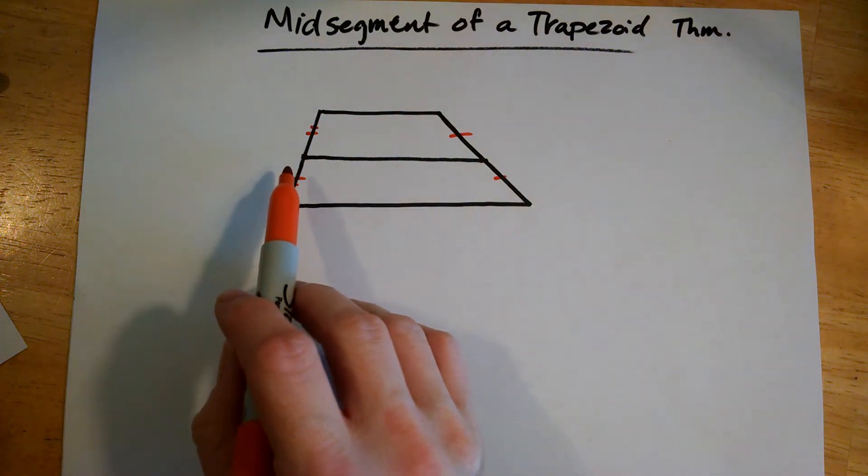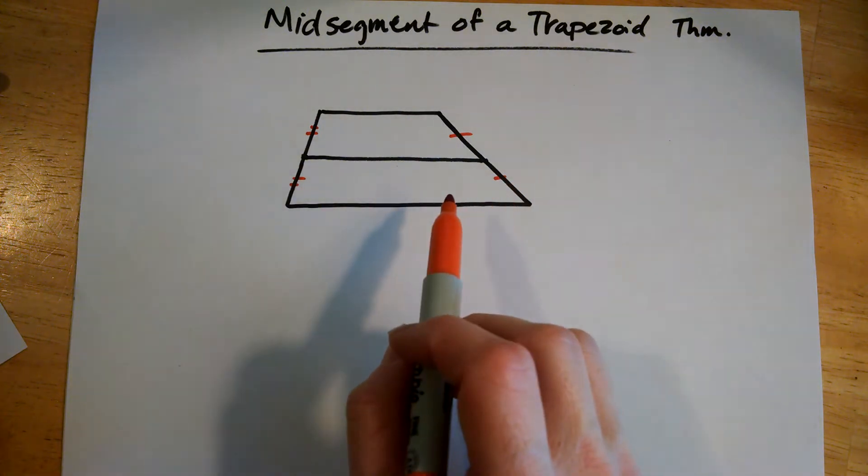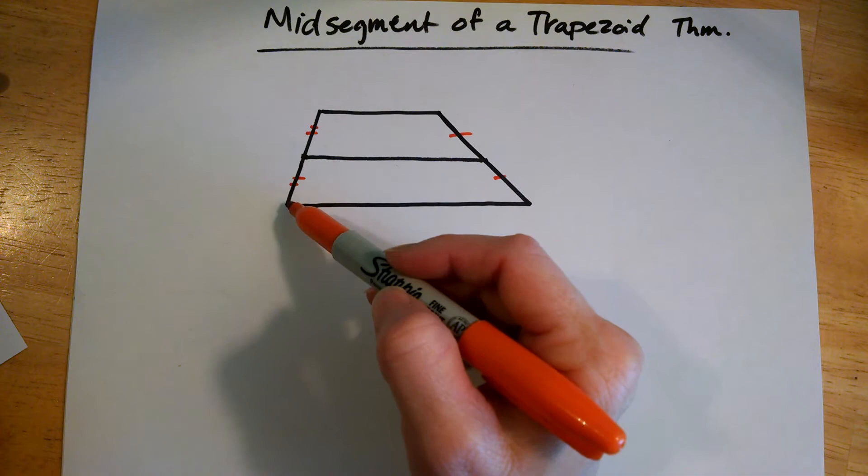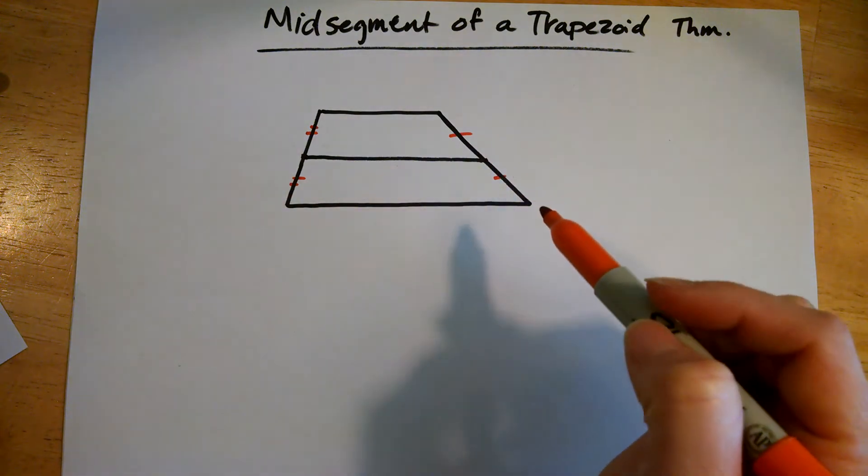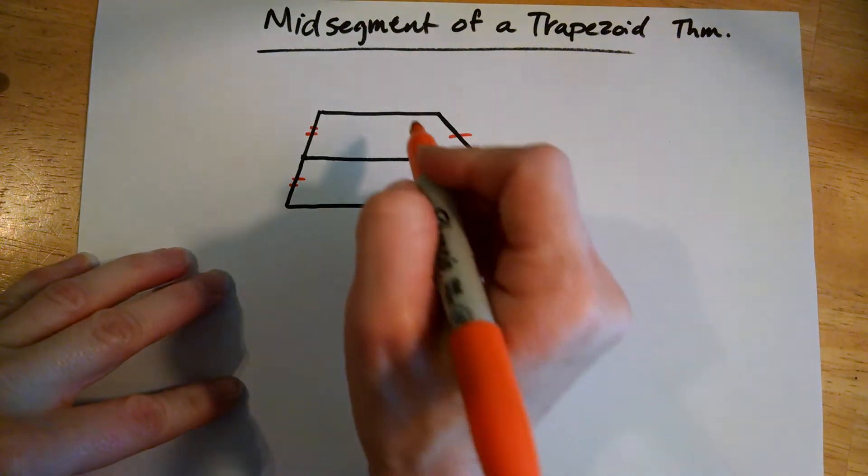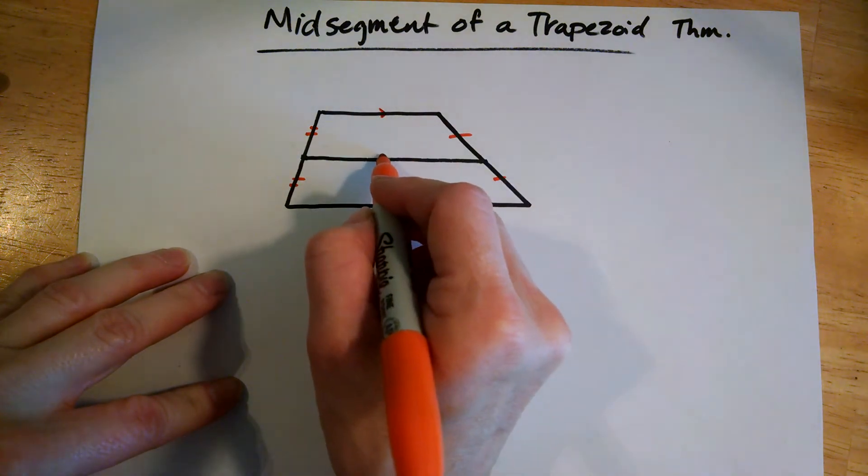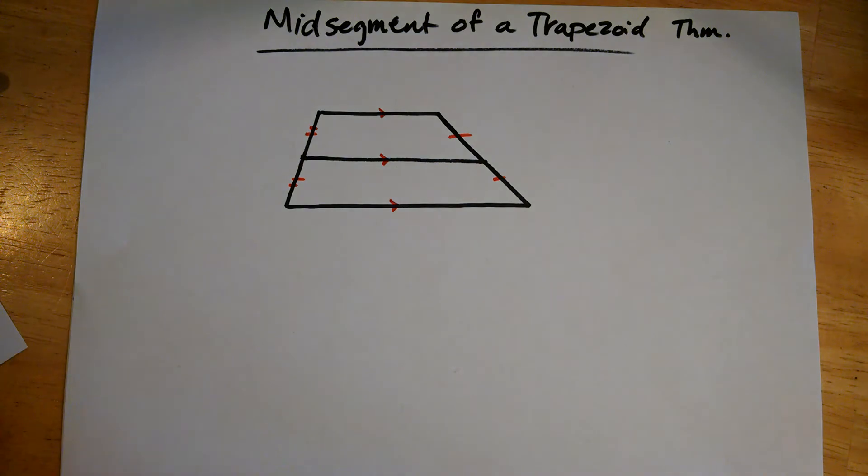Now the mid-segment is a segment in a trapezoid that is from the midpoint of one side to the midpoint of the other side, and it is parallel to the top and bottom of this trapezoid. So that is what the mid-segment is. Now to find lengths of that, we've got a nifty little formula here.